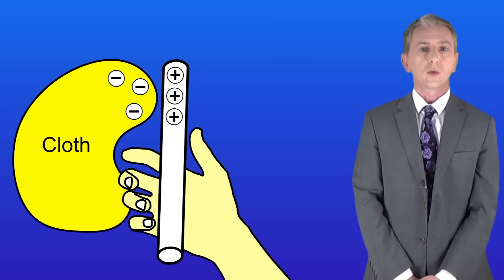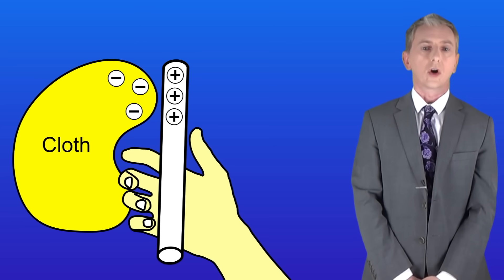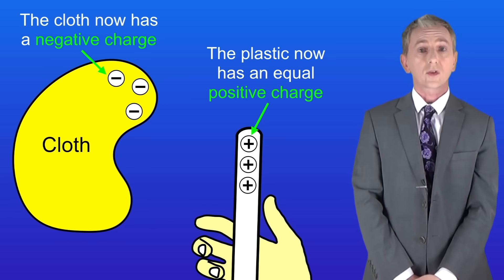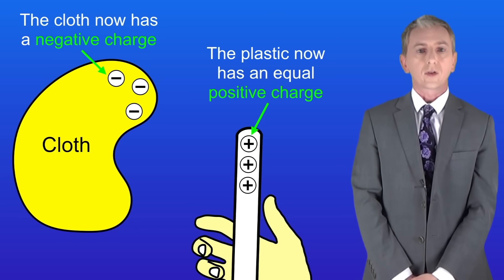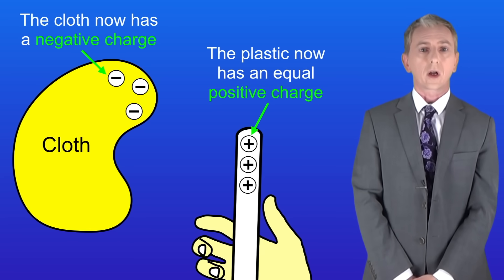So because electrons have moved onto the cloth, the cloth now has an overall negative charge. The plastic has lost electrons so it now has an overall positive charge which is equal in size to the charge on the cloth.